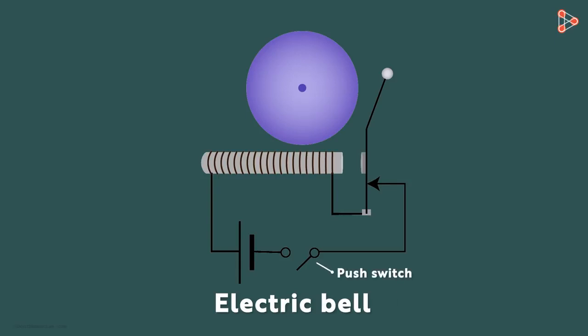This is a push switch which is nothing but the switch we press when we ring the bell. This is a coil of wire wound around an iron piece. There could be two coils of wire wound around an iron piece as well. Remember, we've just drawn a simplistic version of the actual circuit.